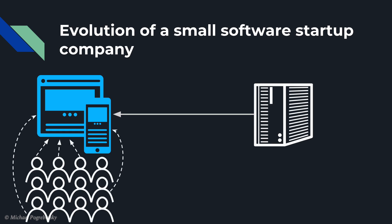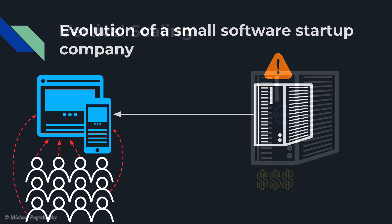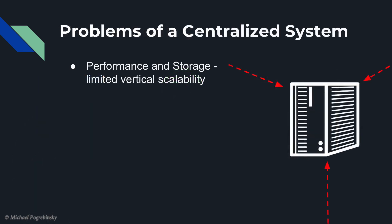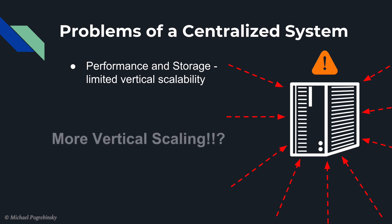As our user base grows, our computer can no longer keep up with the number of requests and the data it needs to store. So we decide to upgrade the computer to the latest and greatest most powerful computer we can find. That type of upgrade for a system is also referred to as vertical scaling. But unfortunately, that upgrade only delays the real problems waiting for us around the corner. As the traffic to our system keeps increasing, the performance and the memory become a bottleneck, and there is no way for us to upgrade that computer anymore. After all, there is just so much memory and compute power we can get from one single machine, so further vertical scaling is no longer an option.